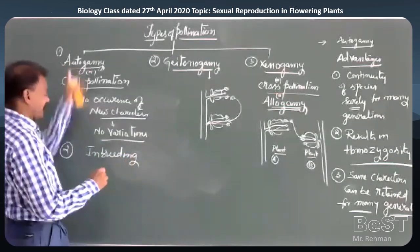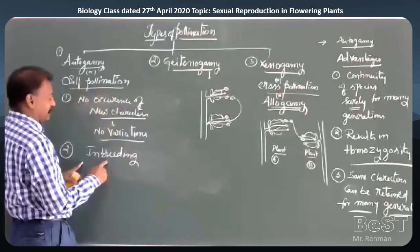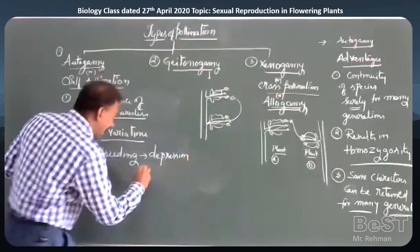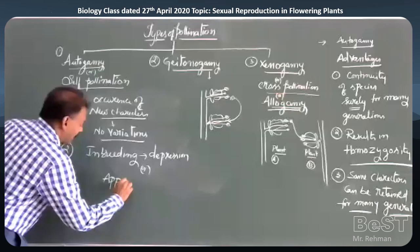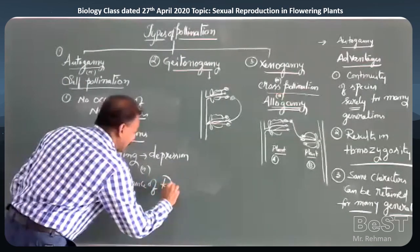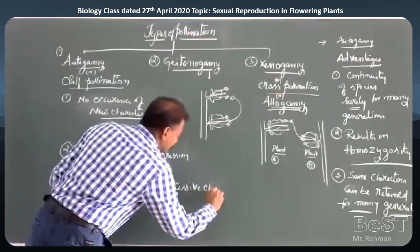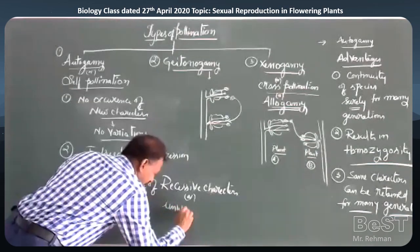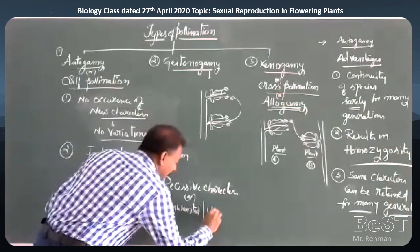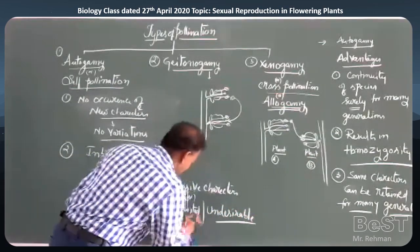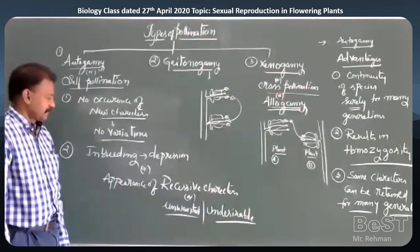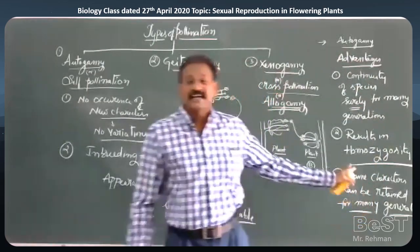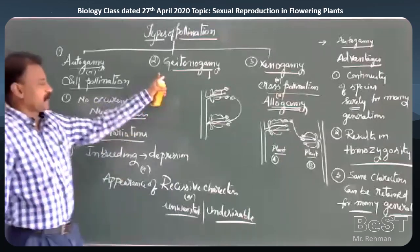So self-pollination over long generations results in inbreeding depression — the appearance of recessive (unwanted or undesirable) characters. Thus, autogamy or self-pollination has both advantageous and disadvantageous characteristic features.